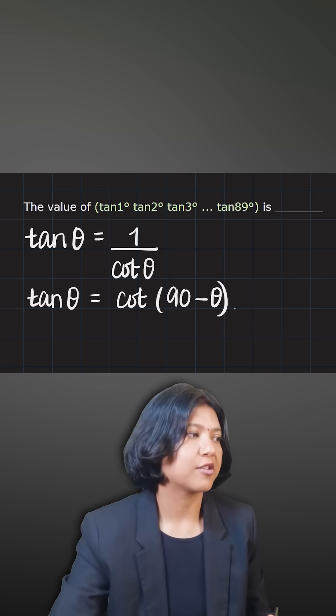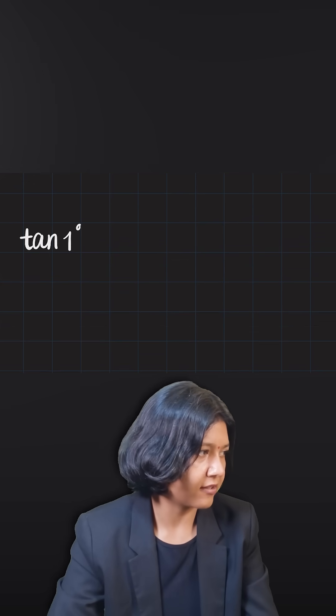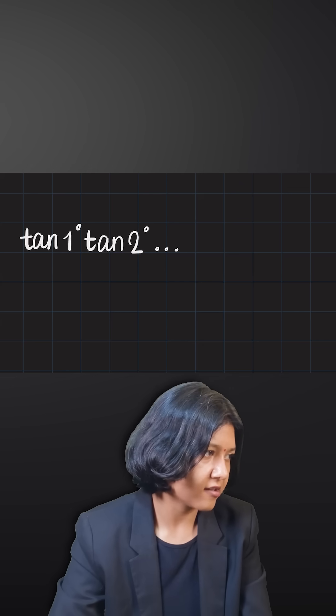So when you know this, you can look at the expression we are finding: tan 1 times tan 2. Let me say that I want to write all of them the way they are, and you can think about the middlemost value. It would go on like this.